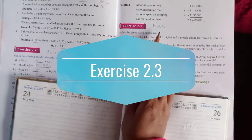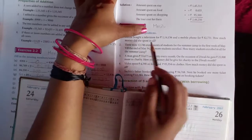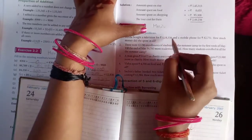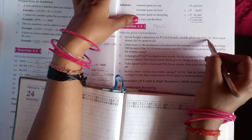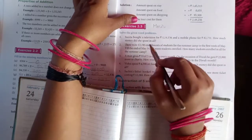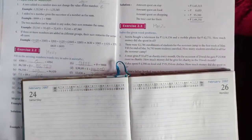Hello students, this was your homework. Now today we will solve this question. Sunita bought a television for 114,156 and a mobile phone for 82,751. How much money did she spend in all? So we can solve it like this.